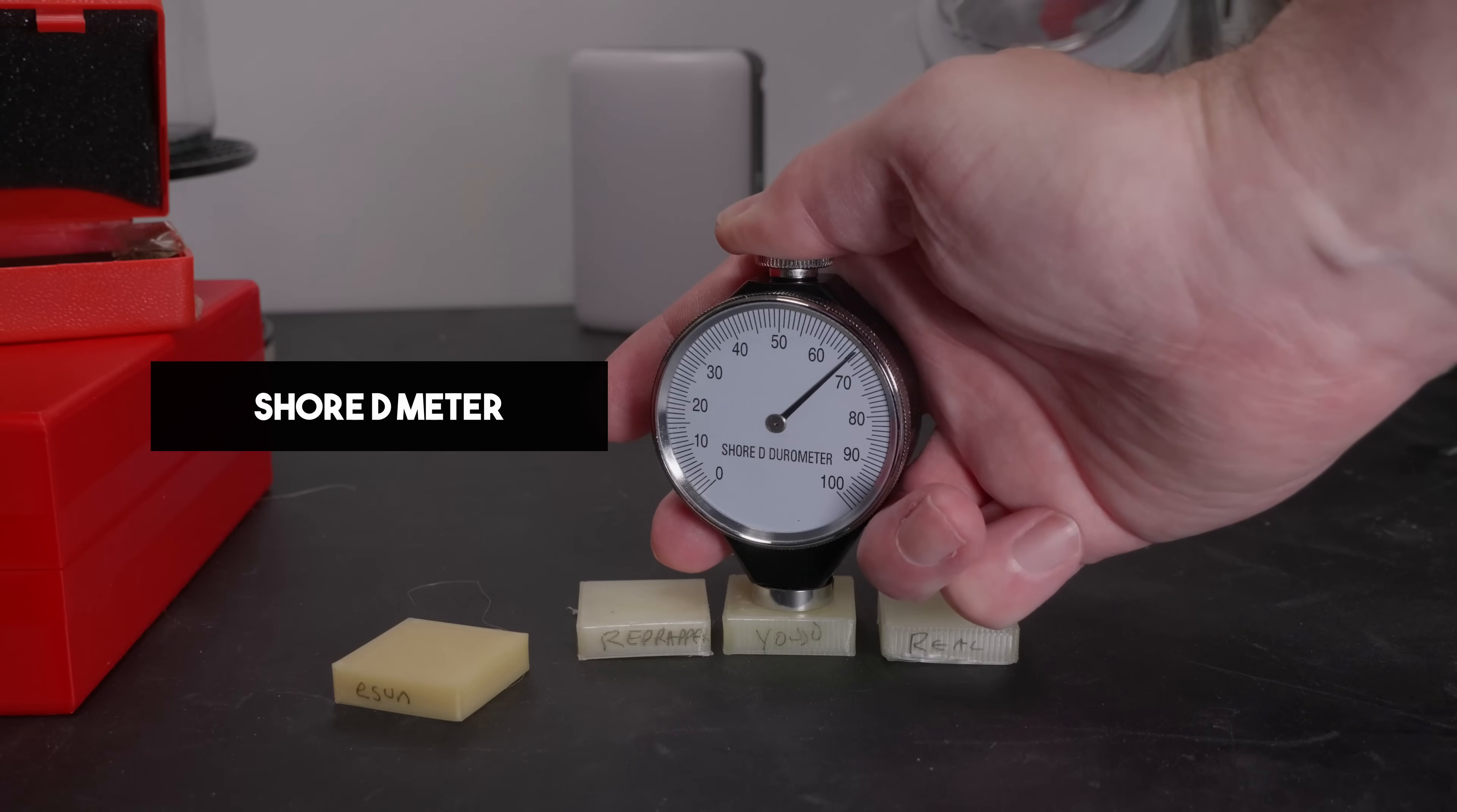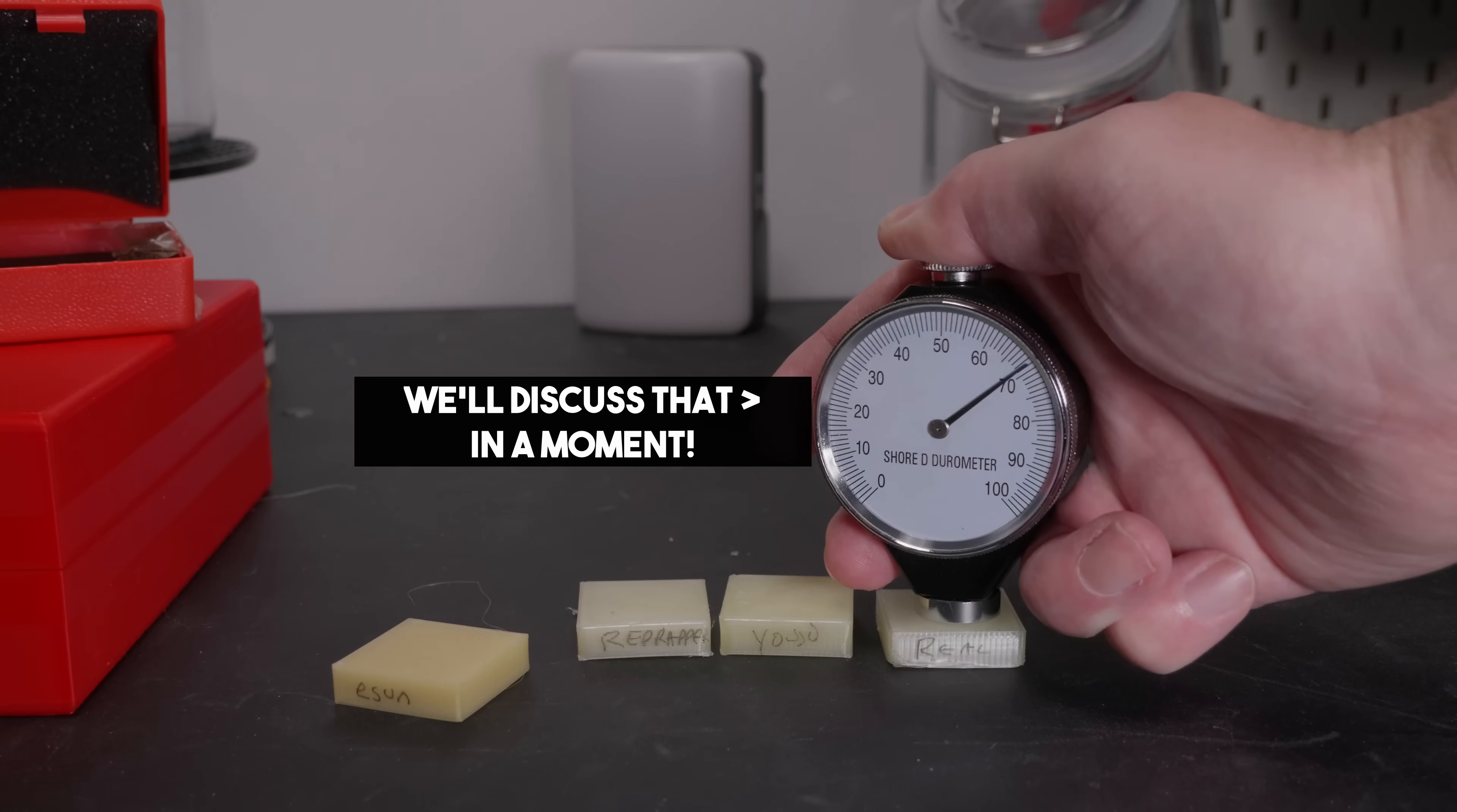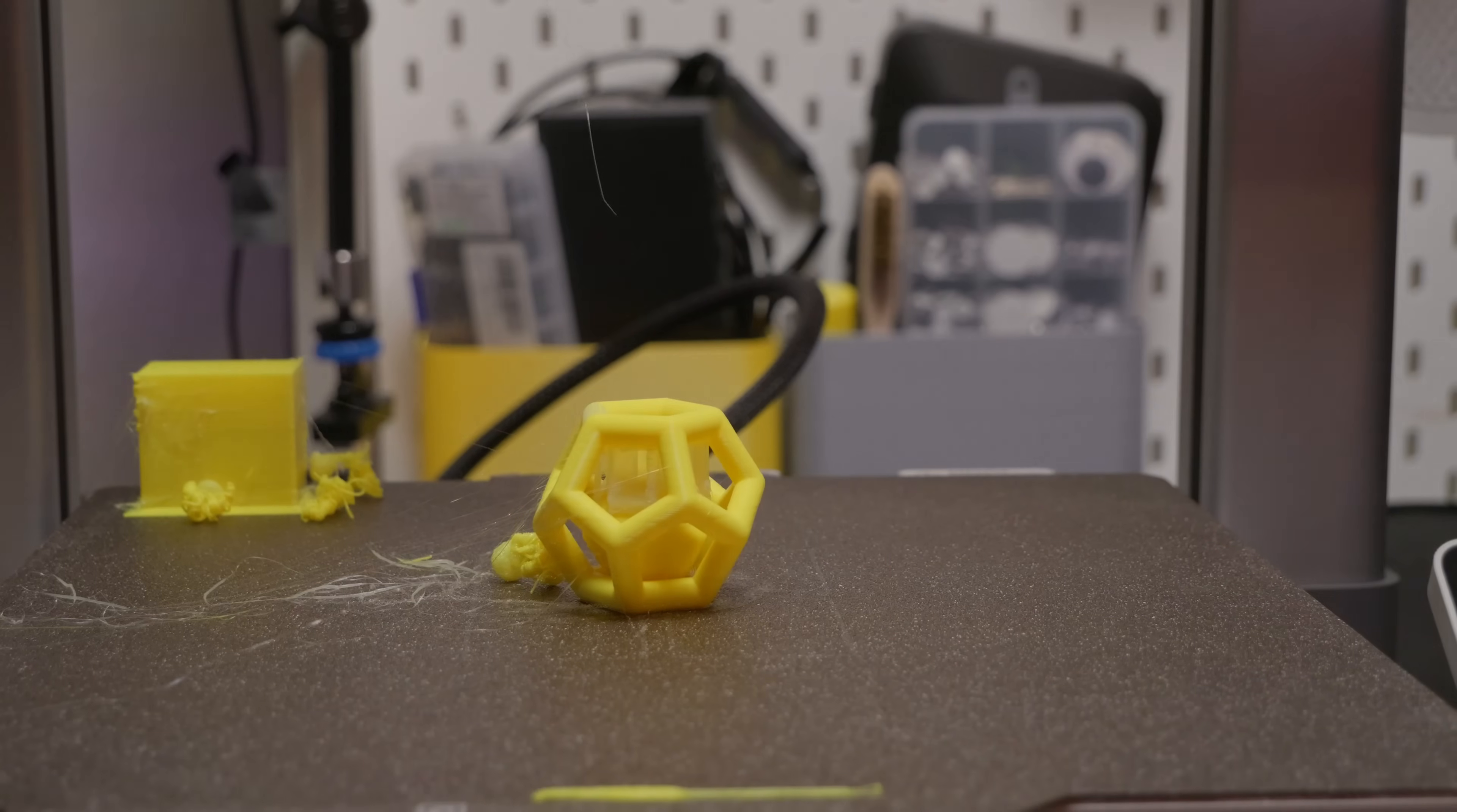Whereas this mystery RepRapper Yusu stuff, interestingly, showing up as being a lot higher. I had to use the D meter on it. It came up as 60D, which is kind of high for the A scale. D is harder than A, so that is actually potentially within the possible range for an AMS. We can give it a go. And the answer was, kind of.